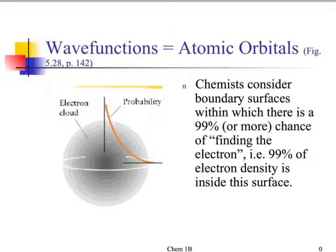We don't know where the electron is or where it's moving. We just know that we could see the electron at a certain time, and whenever they see it, they drew a dot. We can see that 99% of the time the electron lies within this electron cloud — it's just a probability cloud. We can probably see where it is, and I'll show you more probability clouds.